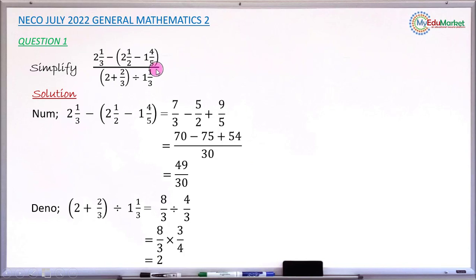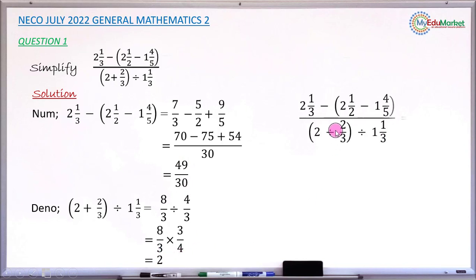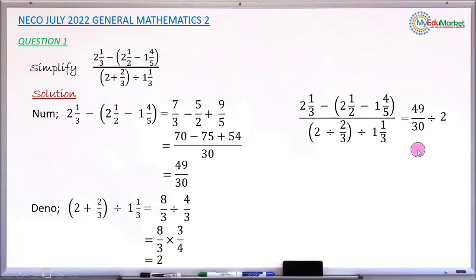Now substitute back into the original fraction: the numerator is 49 over 30 and the denominator is 2. So the original fraction equals 49 over 30 divided by 2. Division by 2 means multiplication by 1 over 2. So 49 times 1 gives 49, and 30 times 2 gives 60.